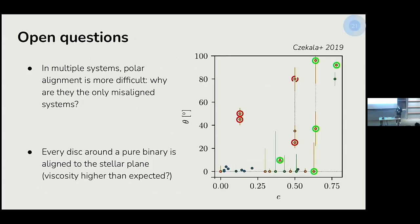Of course, many questions remain open. We are finding that in multiple systems polar alignment is more difficult, yet we observe highly inclined and polarly aligned disks only around multiple stellar systems. Moreover, every disk around a pure binary is aligned to the stellar plane, which is not what we would expect given that initial conditions are expected to be nearly randomly distributed in inclination — so we would expect to find at least some misaligned disks around pure binaries. With these open questions, thank you for your attention and we are happy to take questions.